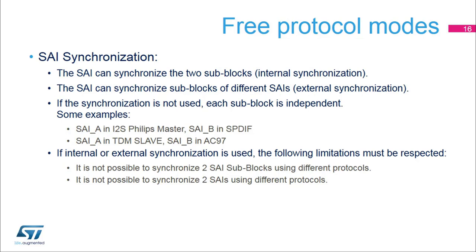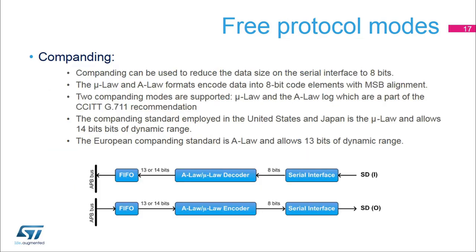The internal synchronization can be used for communication requesting 2 data lanes, such as full duplex I2S. The external synchronization can be used for communication requesting more than 2 data lanes, up to 4, for example when interfacing HDMI ICs. All the sub-blocks synchronized together must use the same protocol characteristics. In order to reduce the data size, it is possible to insert in the data path an A-law or U-law compander.